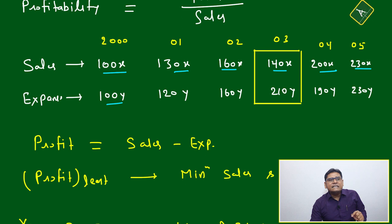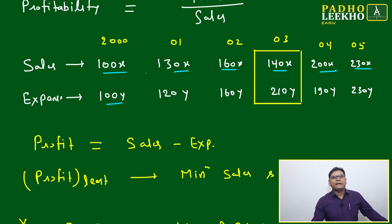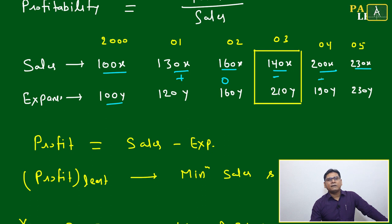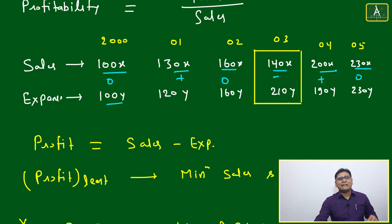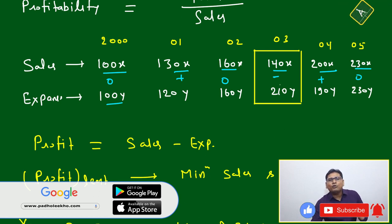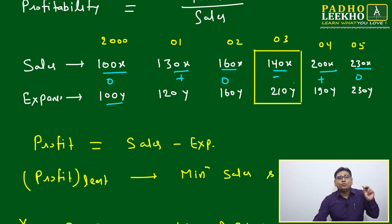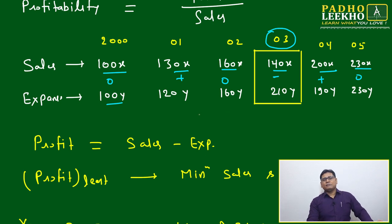Since we don't know x and y, we look at the coefficients. Ignoring x and y: 100−100=0, 130−120=+10, 160−160=0, 140−210=−70, 200−190=+10, 230−230=0. So we get zero, positive, zero, negative, positive, zero. The least value comes where it is negative — that is year 2003, where 140 minus 210 gives a negative coefficient. Since the question states the company is always in profit, year 2003 gives the least profit.